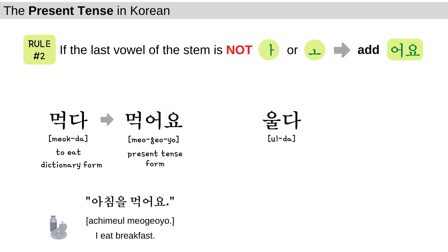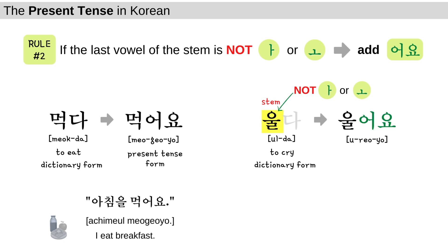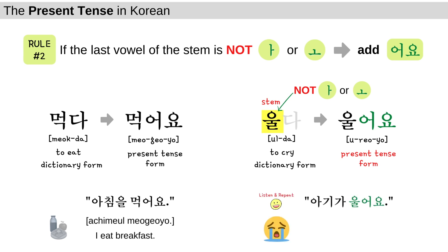울다 is a verb which means to cry, and 울다 is the dictionary form. In order to change 울다 into the present tense form, first you remove 다. Now you have 울, which is the stem. The vowel of the stem is 우, which is not 아 or 오, so you add 어요 at the end: 울어요. Let's take a look at the sample sentence: 아기가 울어요 — A baby is crying. 아기가 울어요.